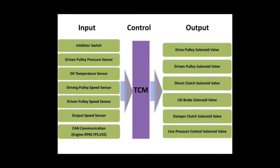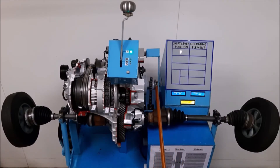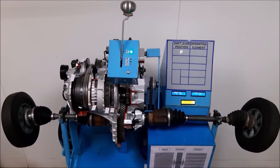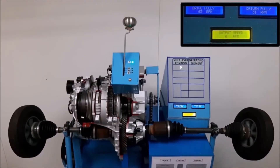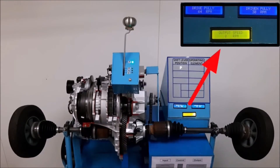To control the solenoid valves, TCM needs the following inputs. In this working model, the torque converter is driven with the help of an electric motor instead of an engine, and pneumatic pressure is given to control the clutches, brakes, and drive and driven pulleys. Let me demonstrate the operation of CVT in different shift driver positions. The speed of the drive pulley, driven pulley, and output speed can be viewed on the tachometer display. The motor drives the drive pulley at around 55 to 65 rpm, but the driven pulley and output speed will vary depending on the pulley ratio and planetary gear set of the sub transmission.